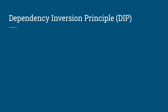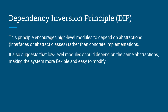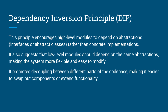Next, we have the Dependency Inversion Principle, or DIP. This principle encourages high-level modules to depend on abstractions — interfaces or abstract classes — rather than concrete implementations of a particular class. It also suggests that low-level modules should depend on the same abstractions, making the system more flexible and easier to modify. This promotes decoupling between different parts of the codebase, making it easier to swap out components or extend functionality.